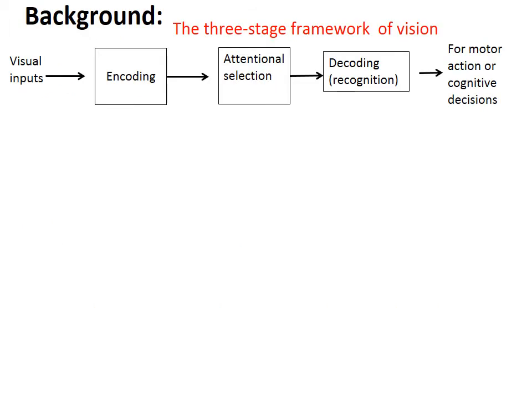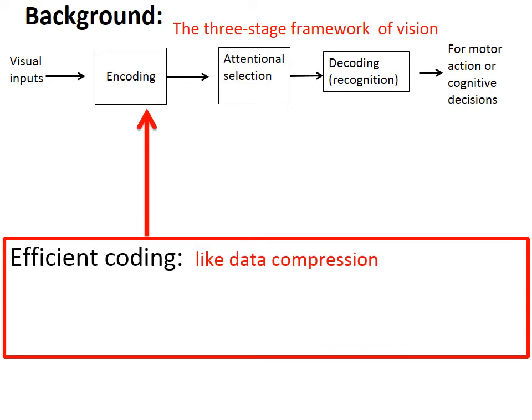The background context is the three-stage framework of vision: encoding, attentional selection, and decoding or recognition. Efficient coding applies to the first stage, so that the transformed or encoded input is more efficiently represented, like data compression.